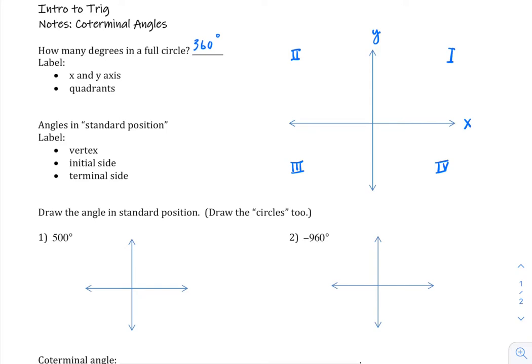When we put angles on the coordinate plane in trig, the origin is where the vertex is of our angle, and what we call the initial side is along the positive x-axis. So this is always where our angles start. We're going to put another ray on there, that'll be our terminal side.